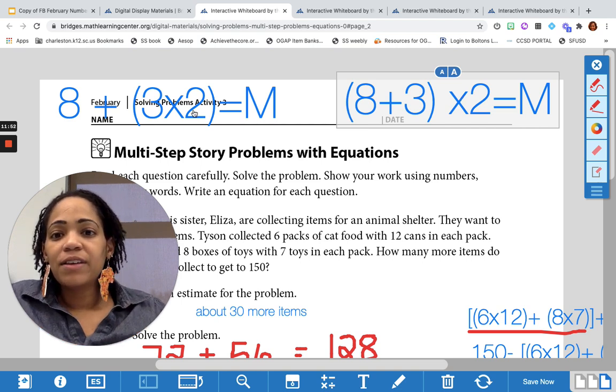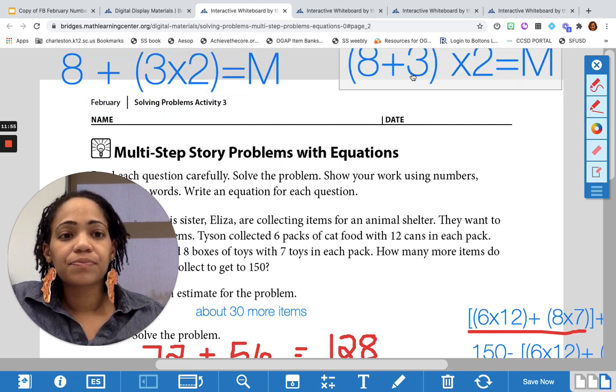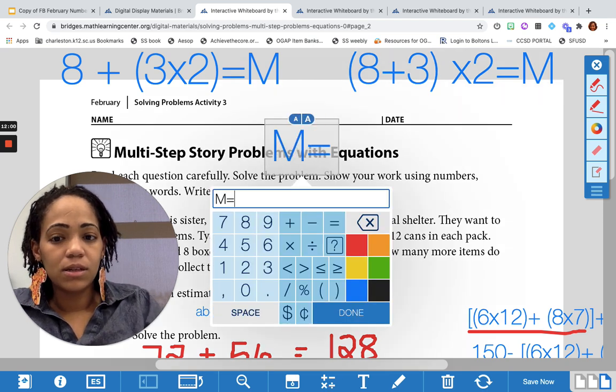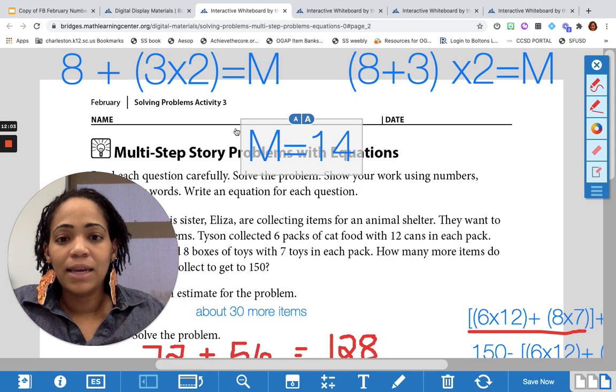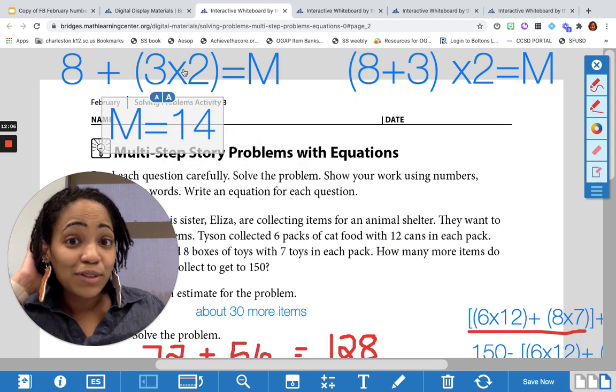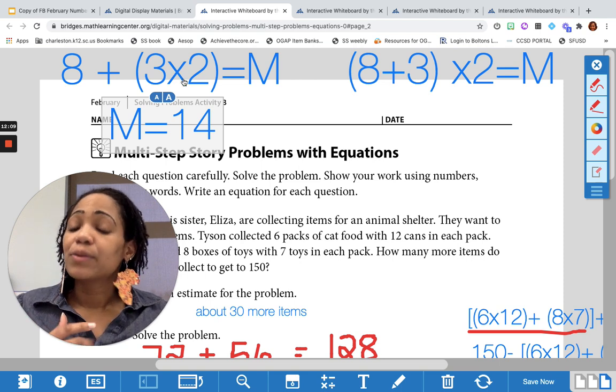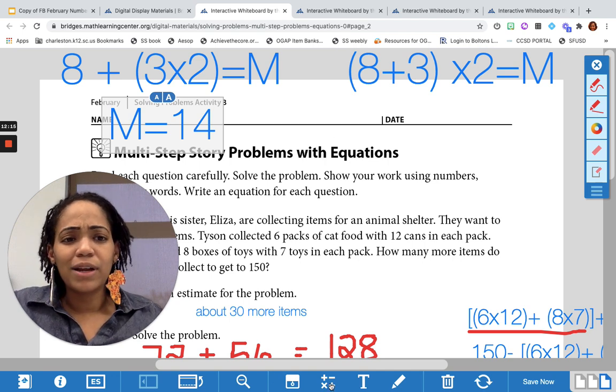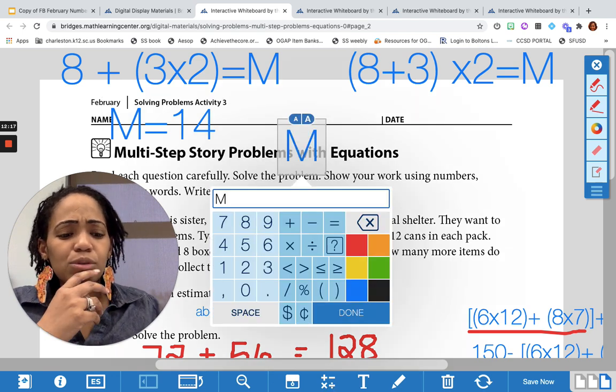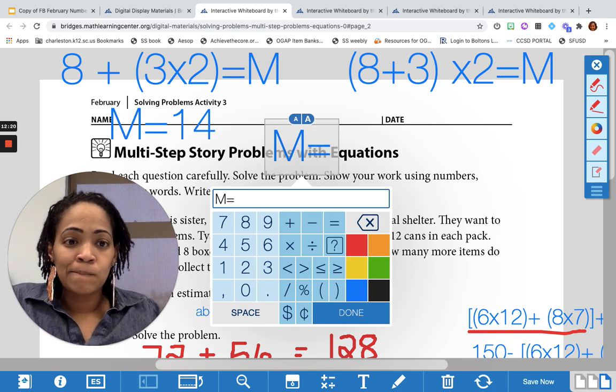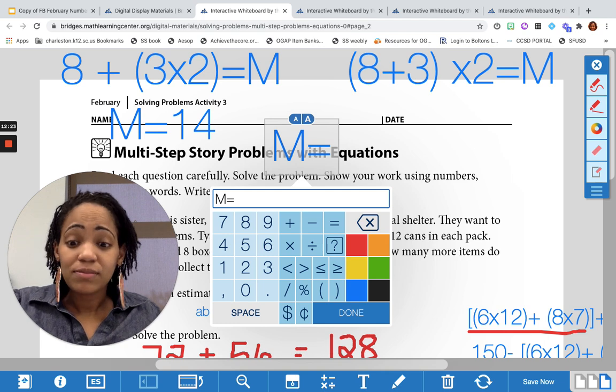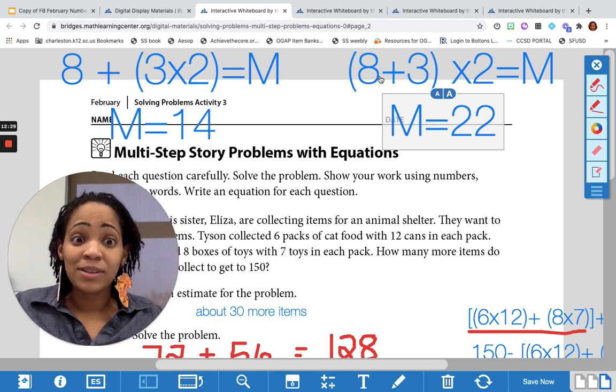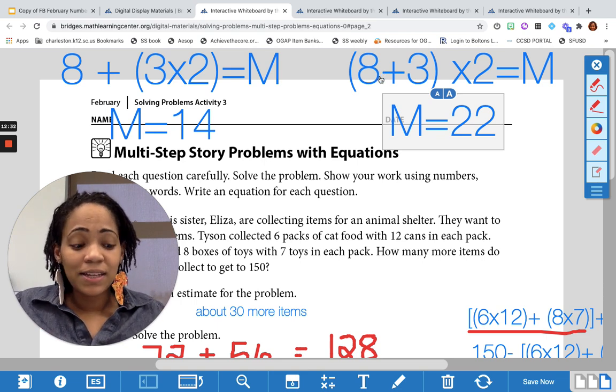All right, what do we get for the very first equation? M is going to end up equaling 14. Why? Because you do 3 times 2 first. What's in parentheses happens first. 3 times 2 is 6, and 6 plus 8 is 14. Well, what do you get for M when you solve the second problem? You get 22. Why? Yeah, because you solve what's in the parentheses first, which is 8 plus 3, and that's 11, and then we multiply it by 2.